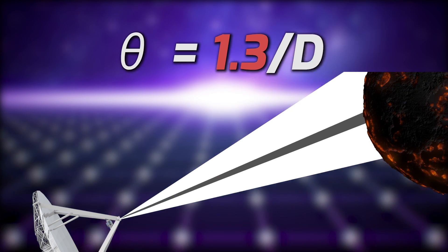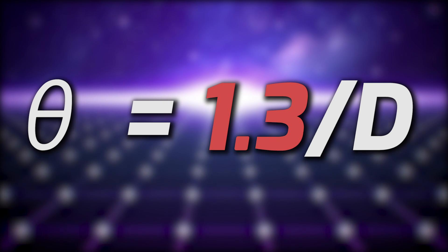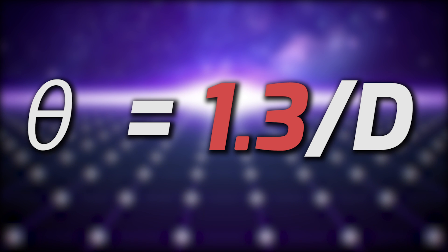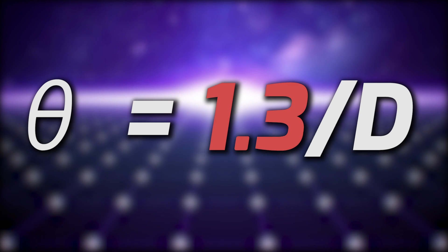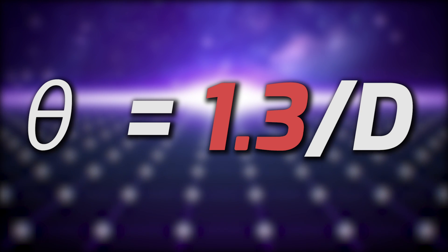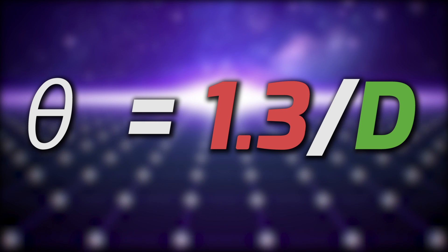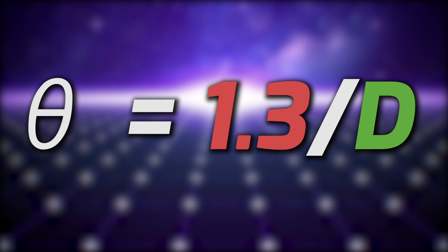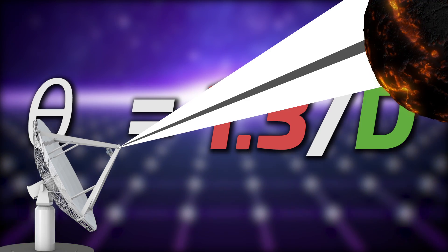We will show our angular resolution — the angle away. If the value of theta is less, the image quality is better. Looking at the equation, if you increase D, the aperture size, the value of theta decreases. The black hole is 55 million light-years away, so we see only about 50 micro-arcseconds. To achieve that angular resolution, we need a telescope with an aperture the size of the Earth.